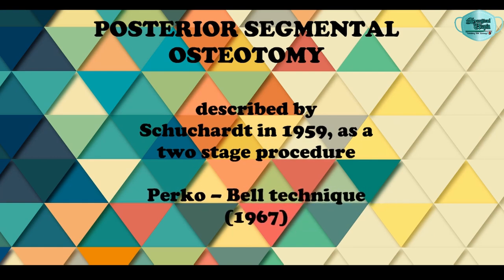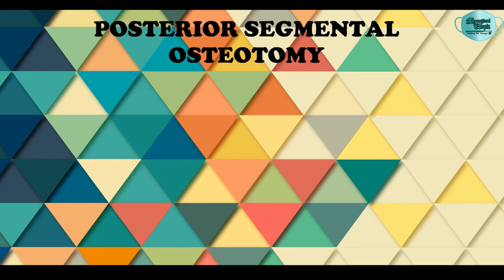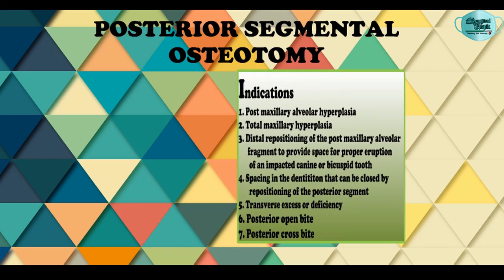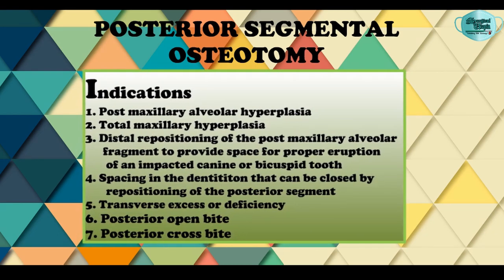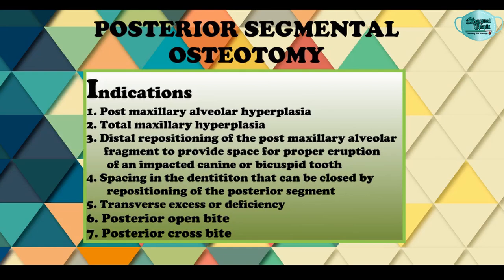Moving on to posterior segmental osteotomy — initially Schuchardt in 1959 described it as a two-stage procedure, but now it is done as a single-stage procedure. Perko gave the Bell technique for posterior segmental osteotomy in 1967. Posterior segmental osteotomy is indicated in cases of posterior maxillary hyperplasia and total maxillary hyperplasia.